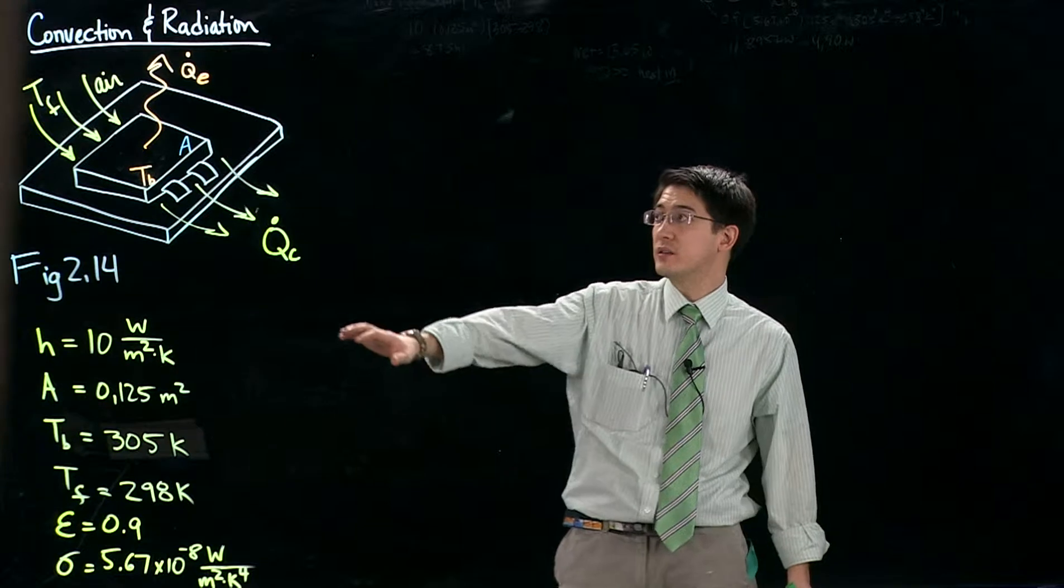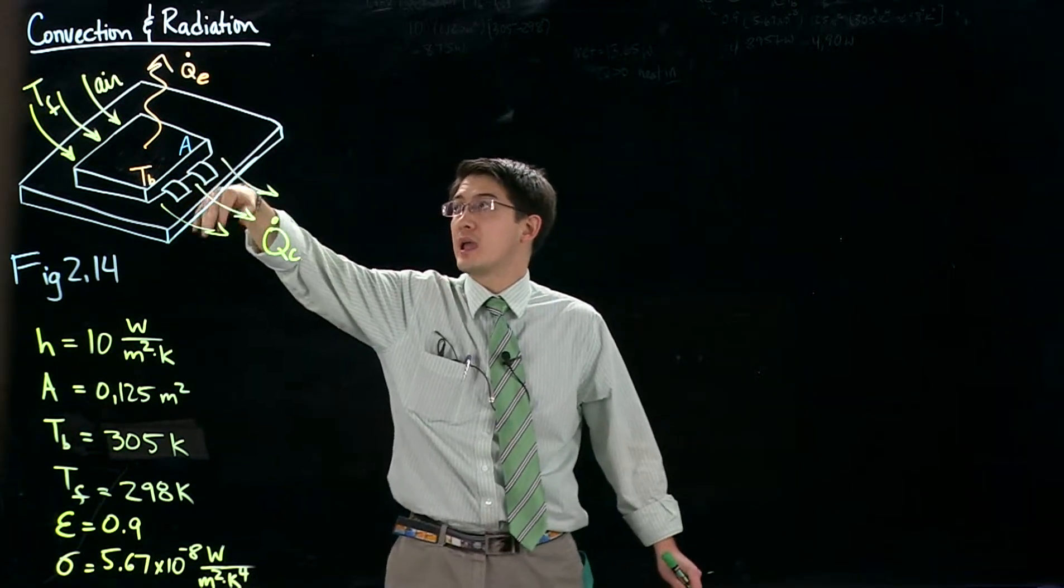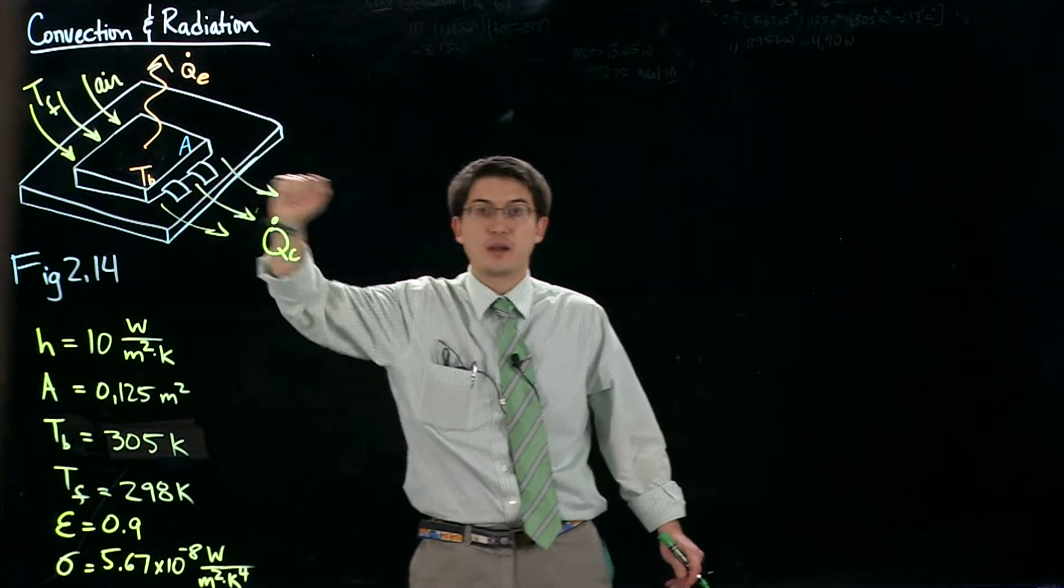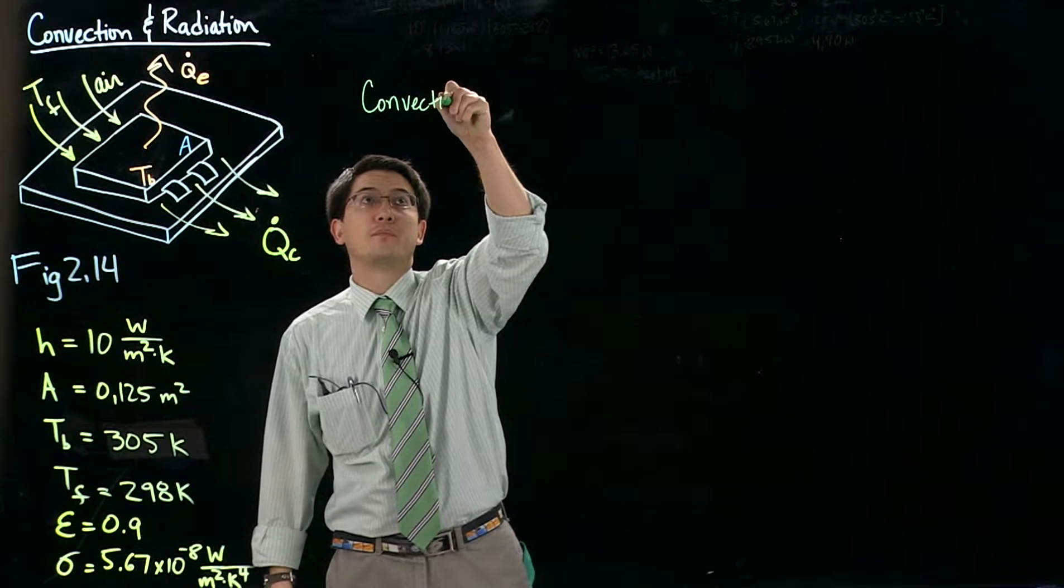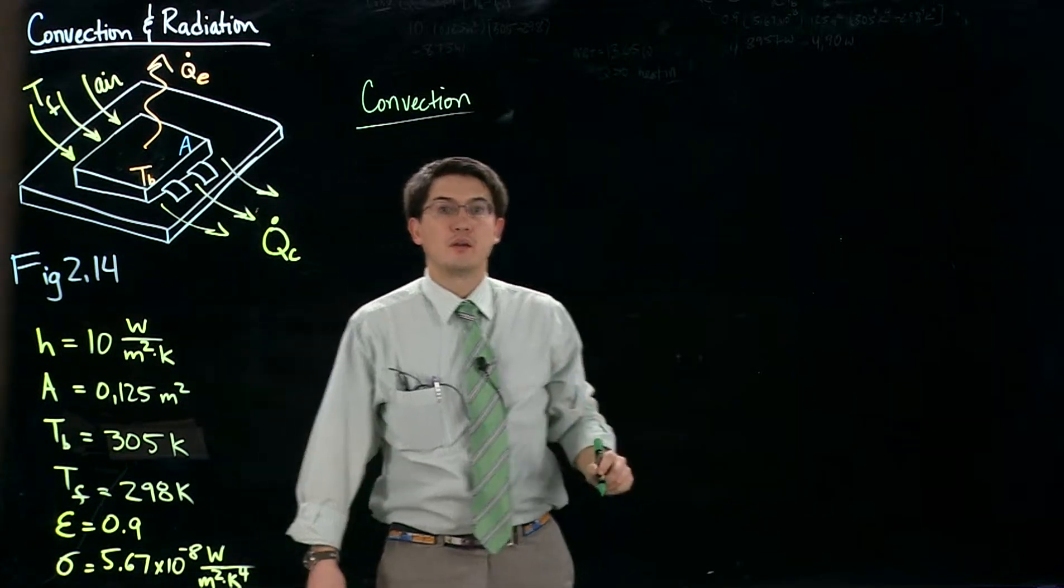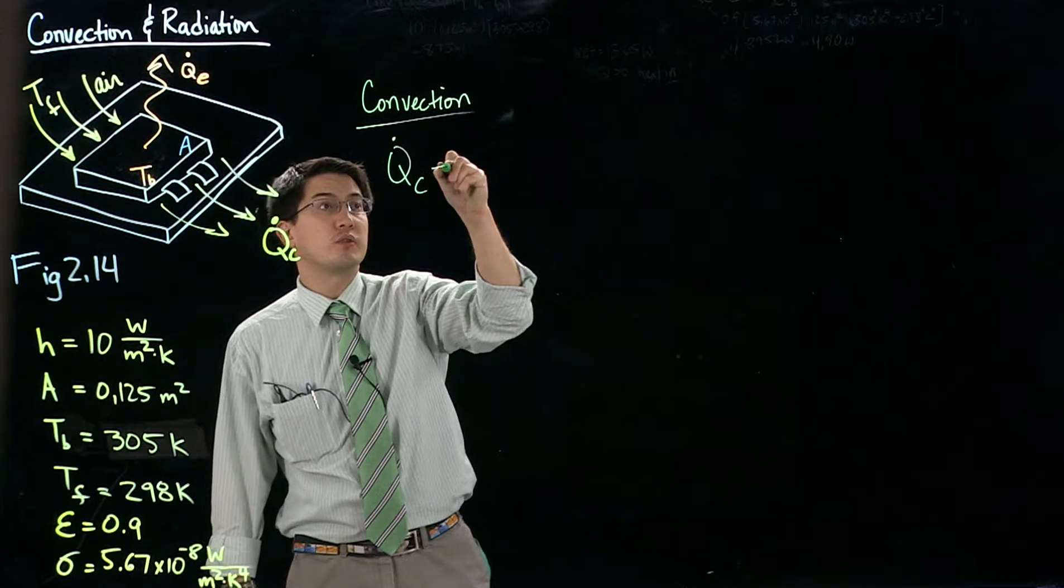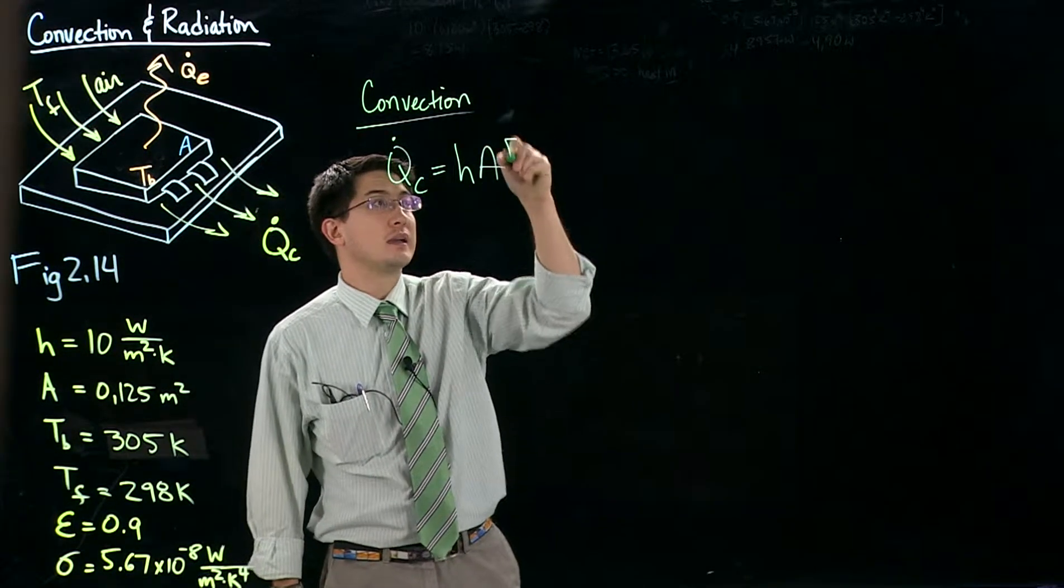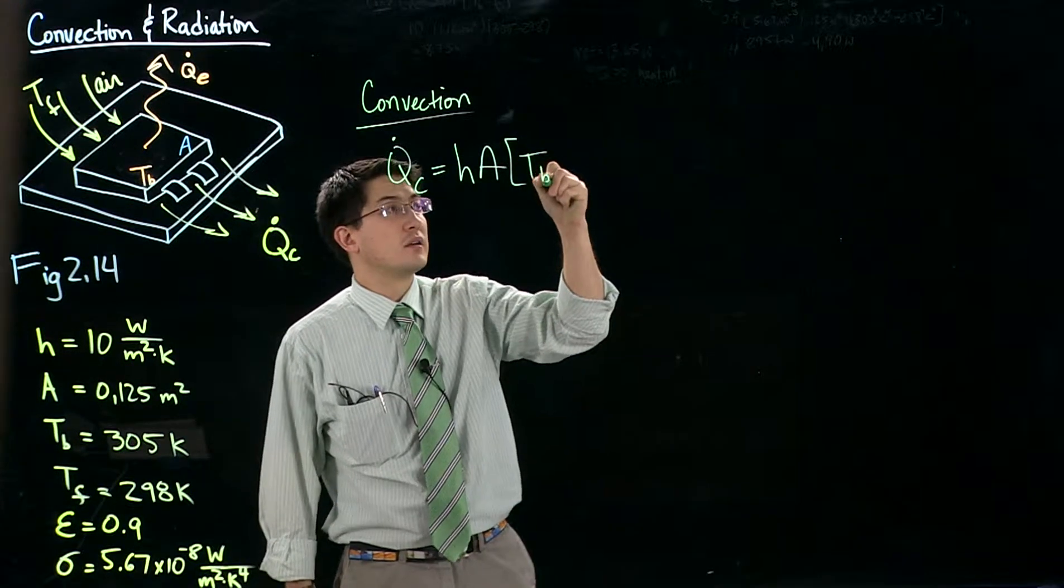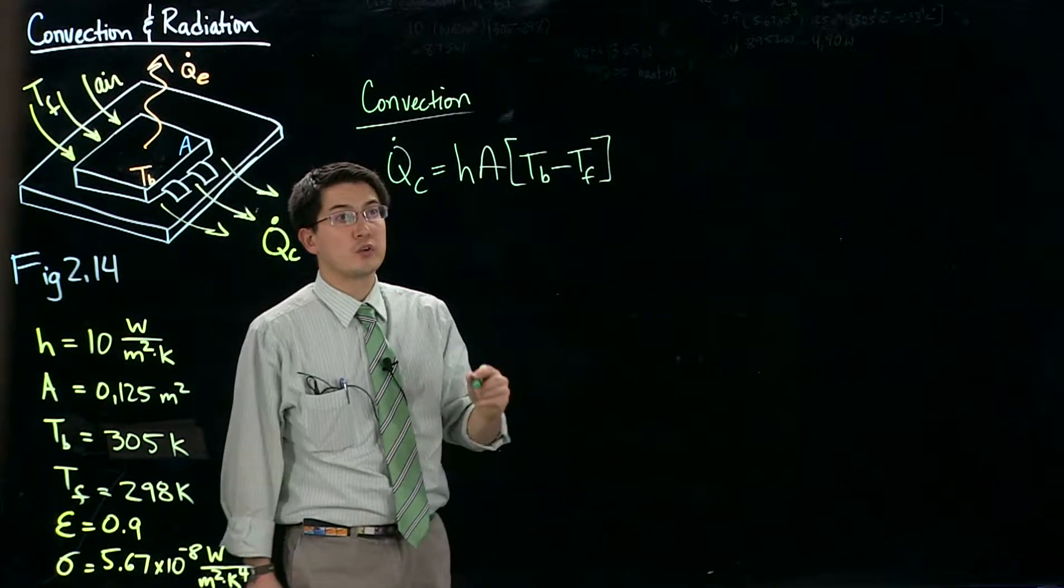So there are going to be two parts to this. We need to solve for the convective heat transfer rate and also the radiation heat transfer rate. So let's start with the convection part. We know that the heat transfer rate due to convection is going to be h times A times the temperature difference.